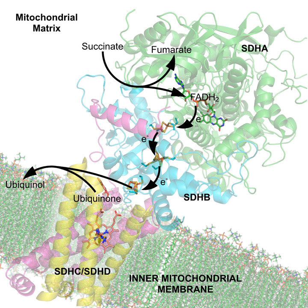For example, the multi-enzyme complex pyruvate dehydrogenase at the junction of glycolysis and the citric acid cycle requires five organic cofactors and one metal ion: loosely bound thiamine pyrophosphate (TPP), covalently bound lipoamide and flavin adenine dinucleotide (FAD), and the co-substrates nicotinamide adenine dinucleotide (NAD+) and coenzyme A (CoA), and a metal ion Mg2+. Organic cofactors are often vitamins or made from vitamins.